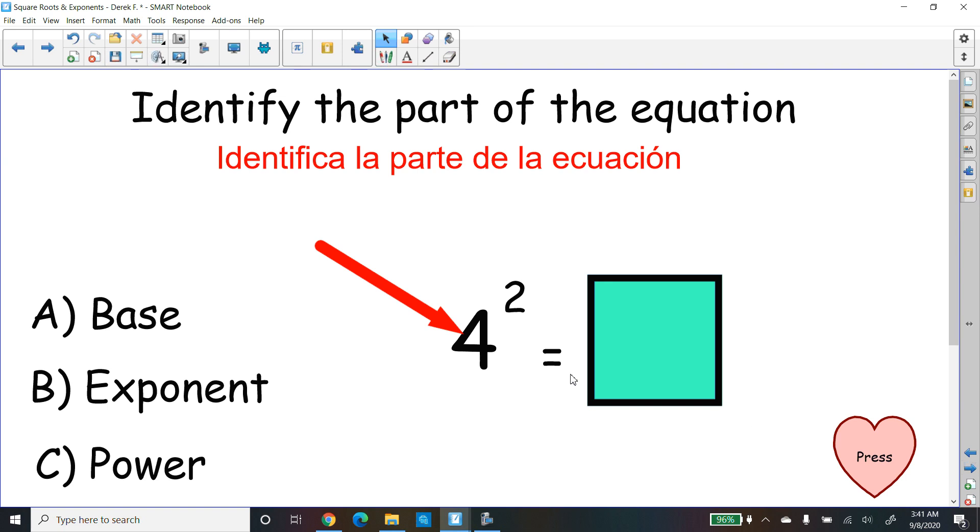Here's one for you. What do you think that number is? The big four. And if you said base, if that was the only one left, good. But remember, it's the big number that's underneath the little number. And I'm going to leave it for you to figure out what's the answer for this one. So the 4 is called A, the base. Nice job.